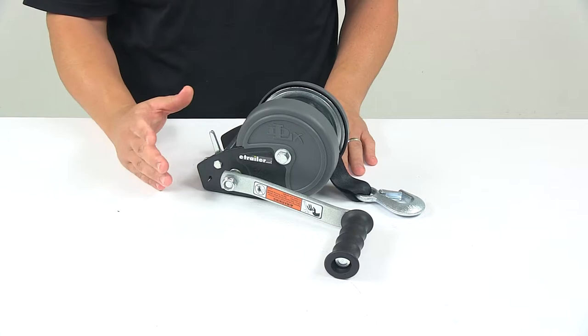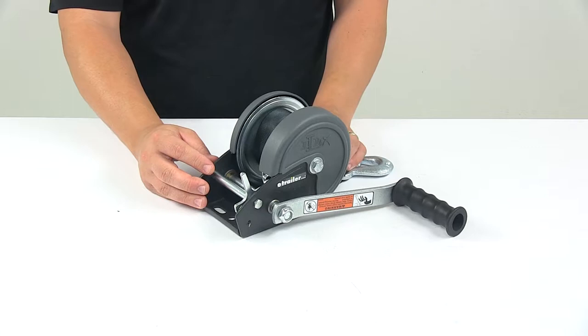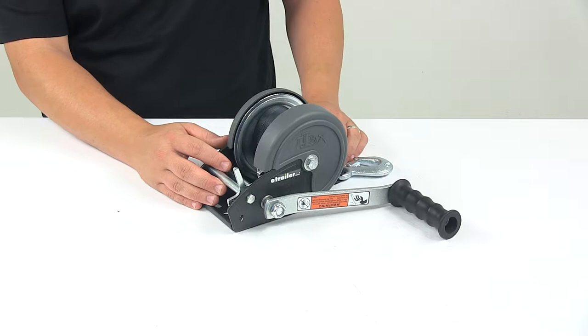Now this unit does feature a freewheel mode that lets you manually control the strap payout. The ratchet pawl, which is located right here, locks the load in place when the handle stops cranking to prevent unintentional payout. The ratchet can be flipped so you can crank the strap from the bottom of the reel.